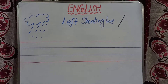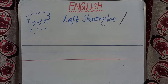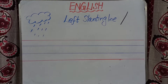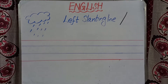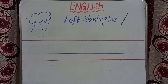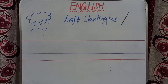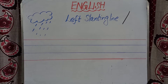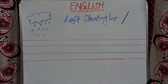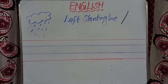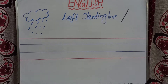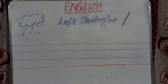Good morning all. Let's see how to write slanting line. We have two types of slanting line: one is left slanting line and another one is right slanting line. Today we are going to see how to write left slanting line.